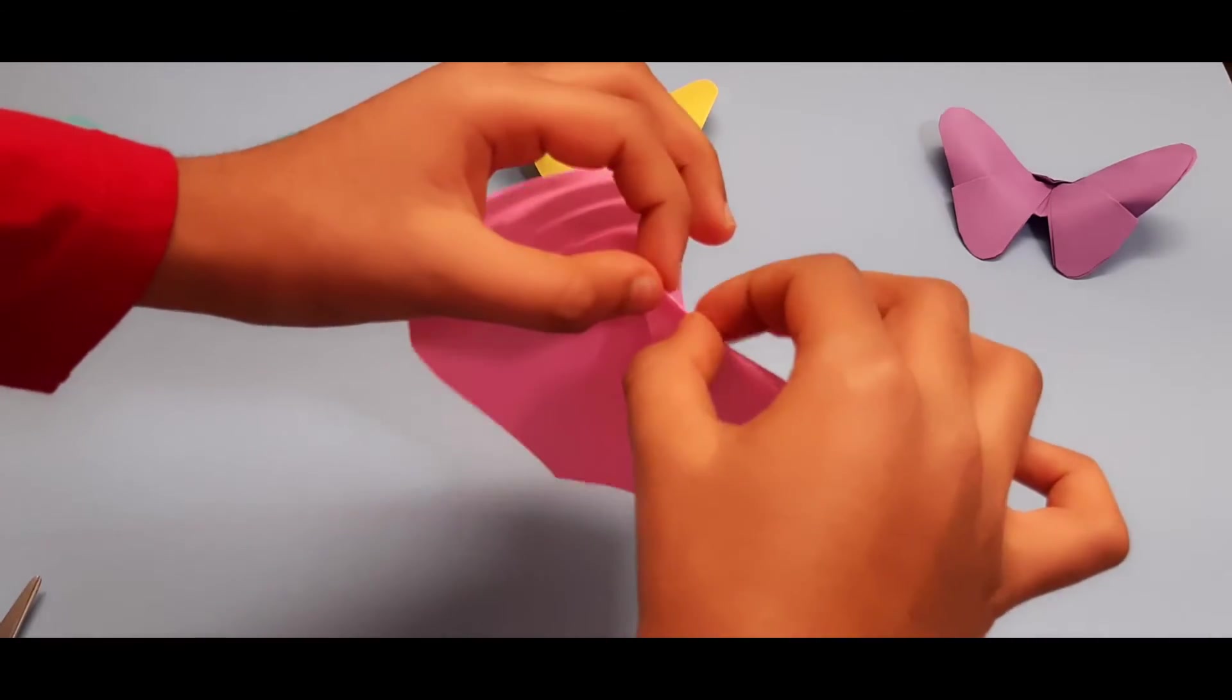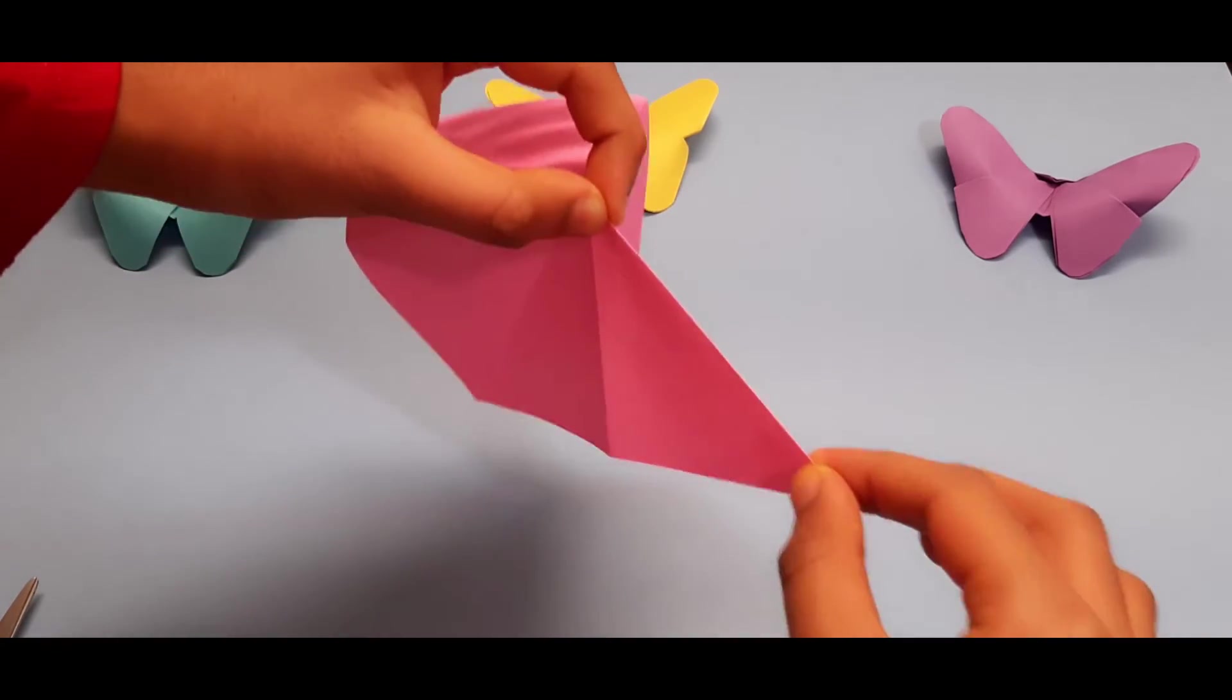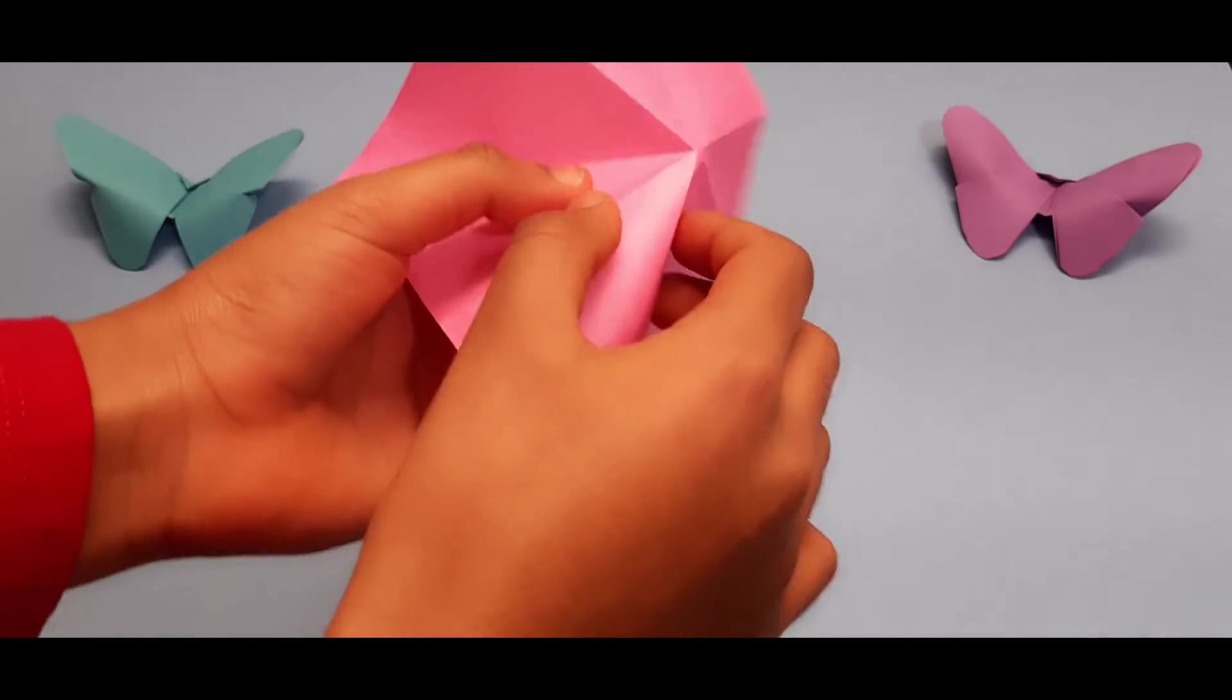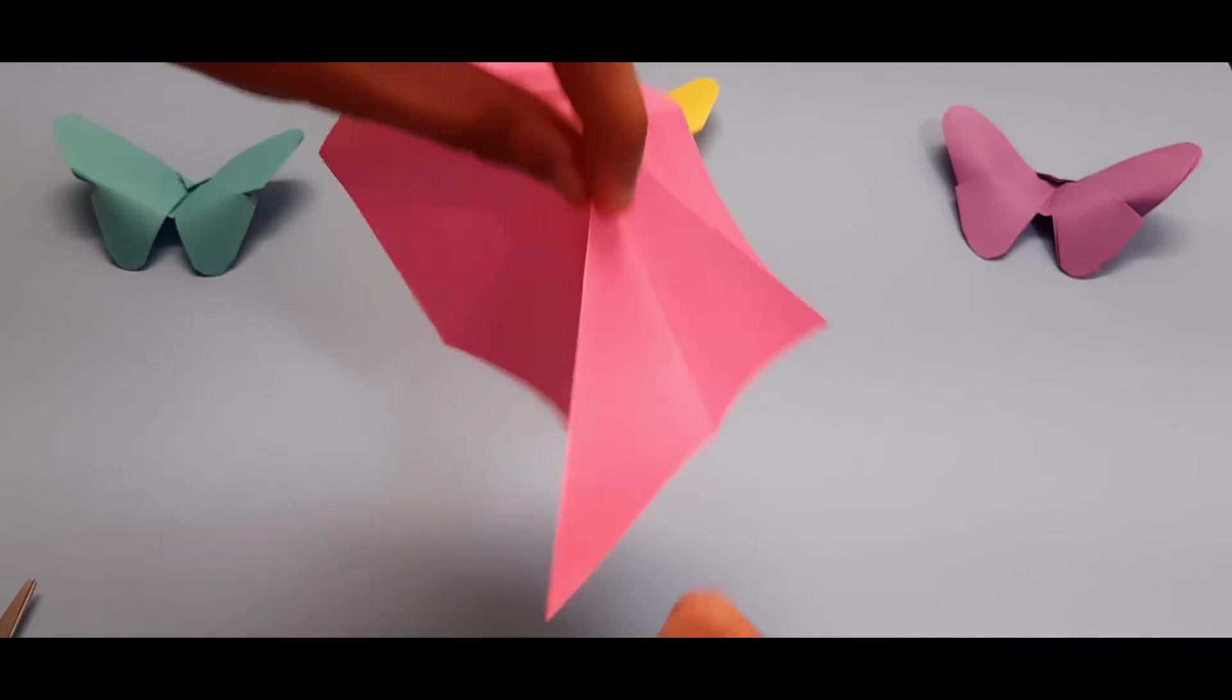Now fold on the crease that you made previously right over there, then fold again on the other side into a mountain fold so you create a triangle, the mountain fold.